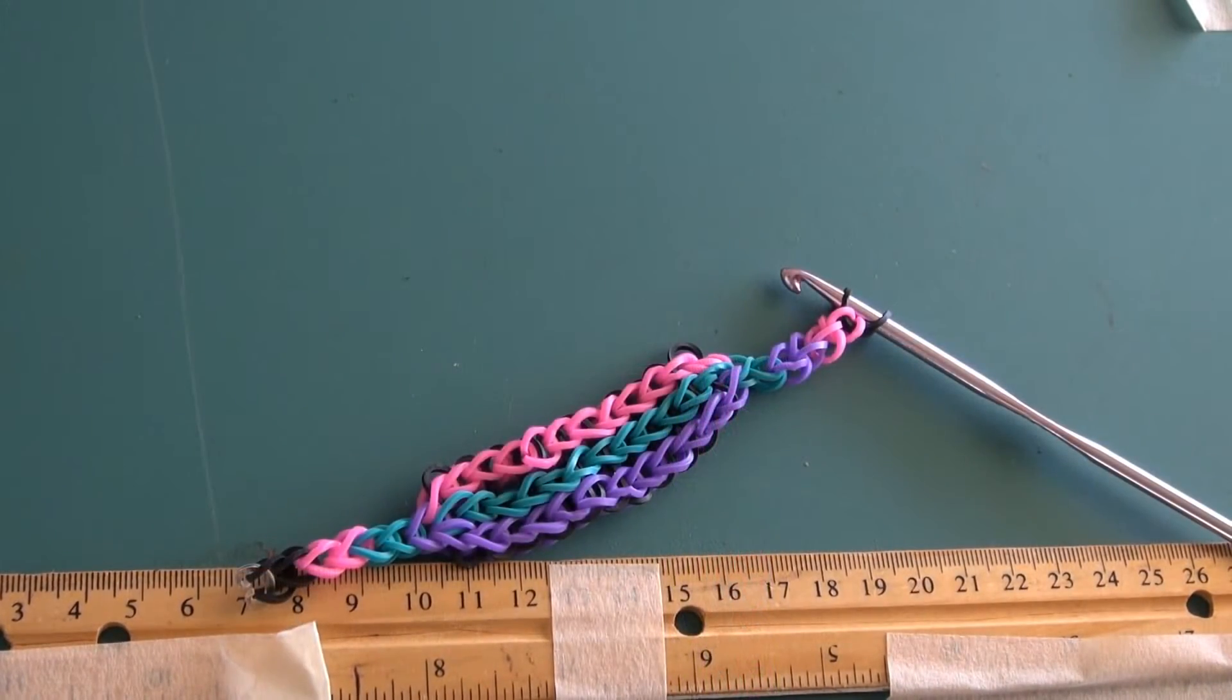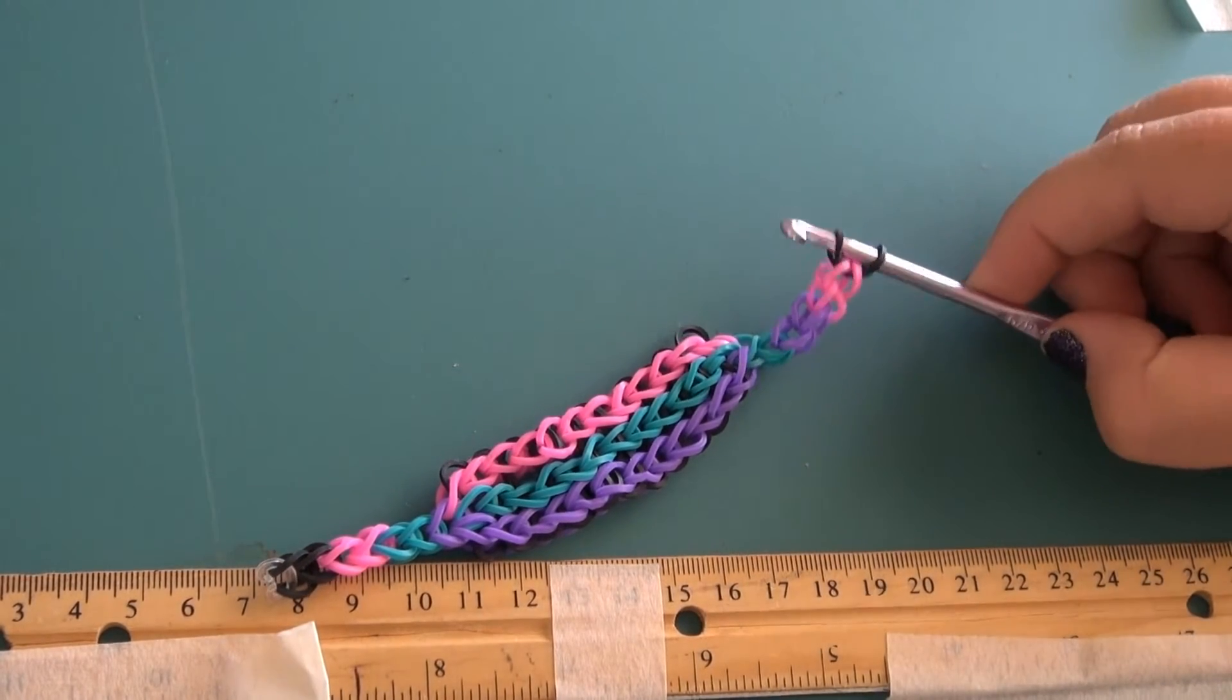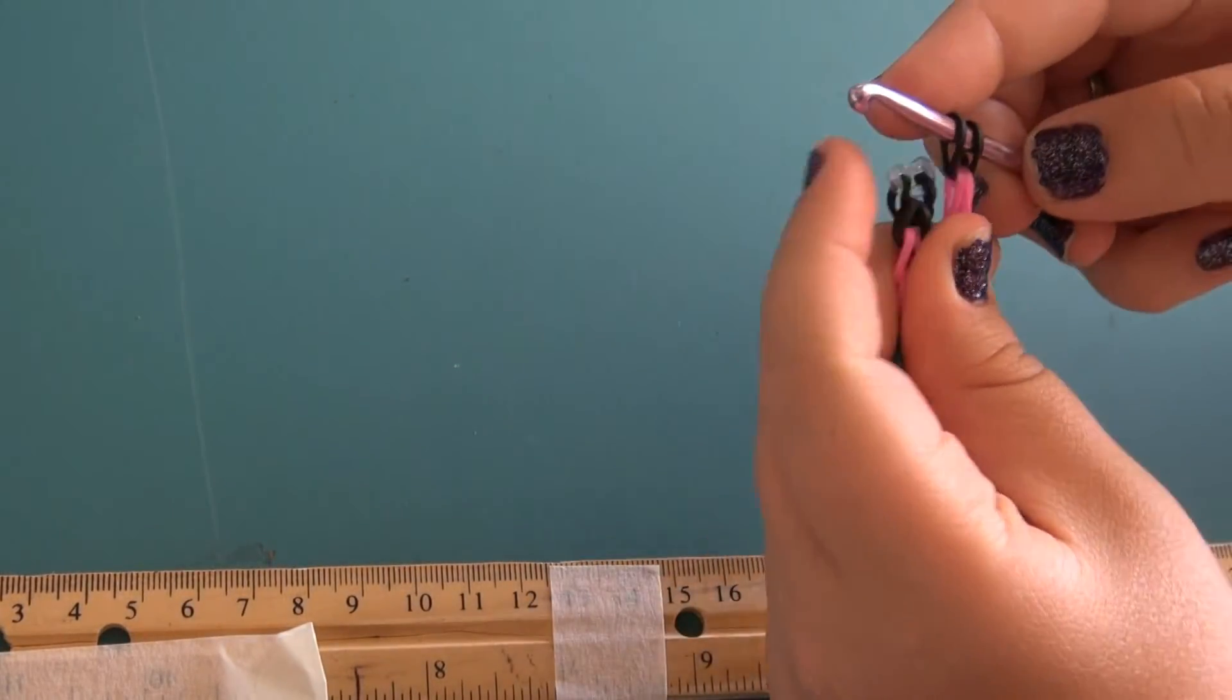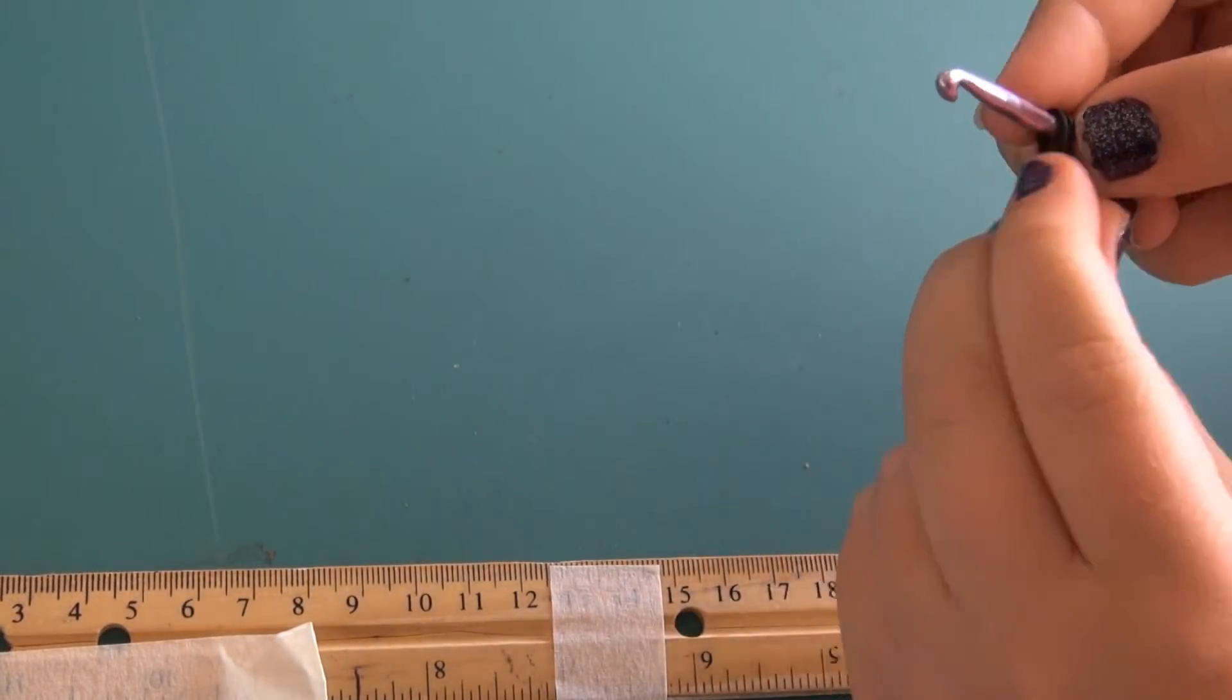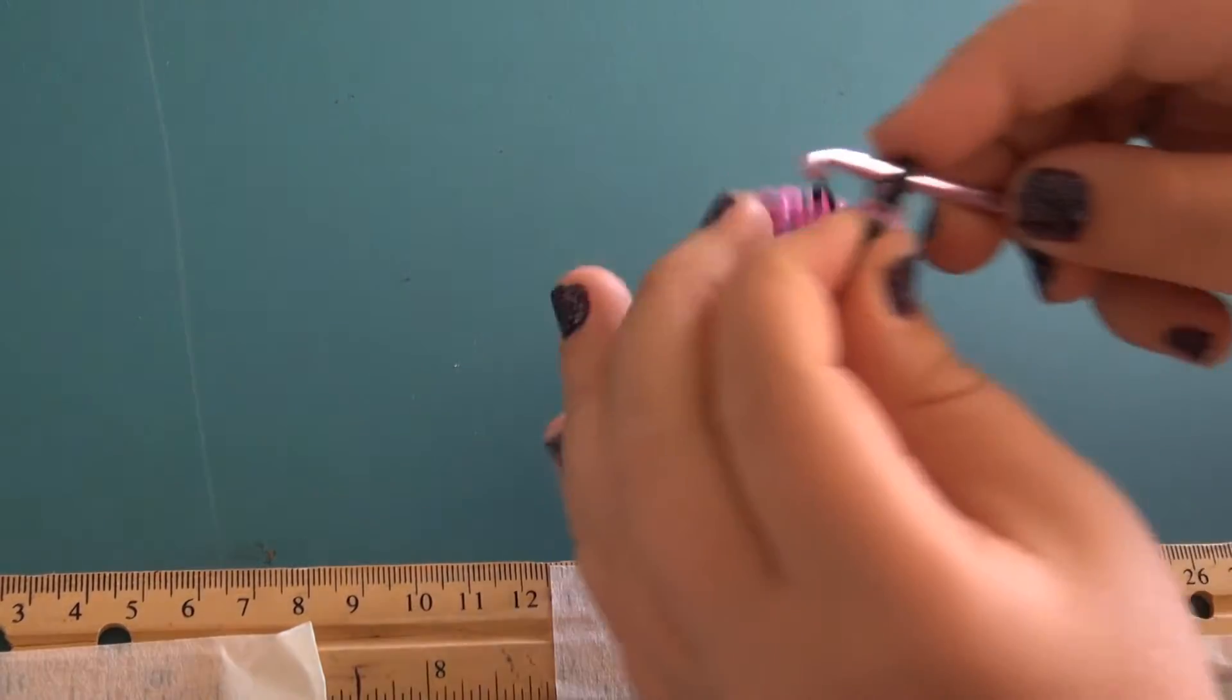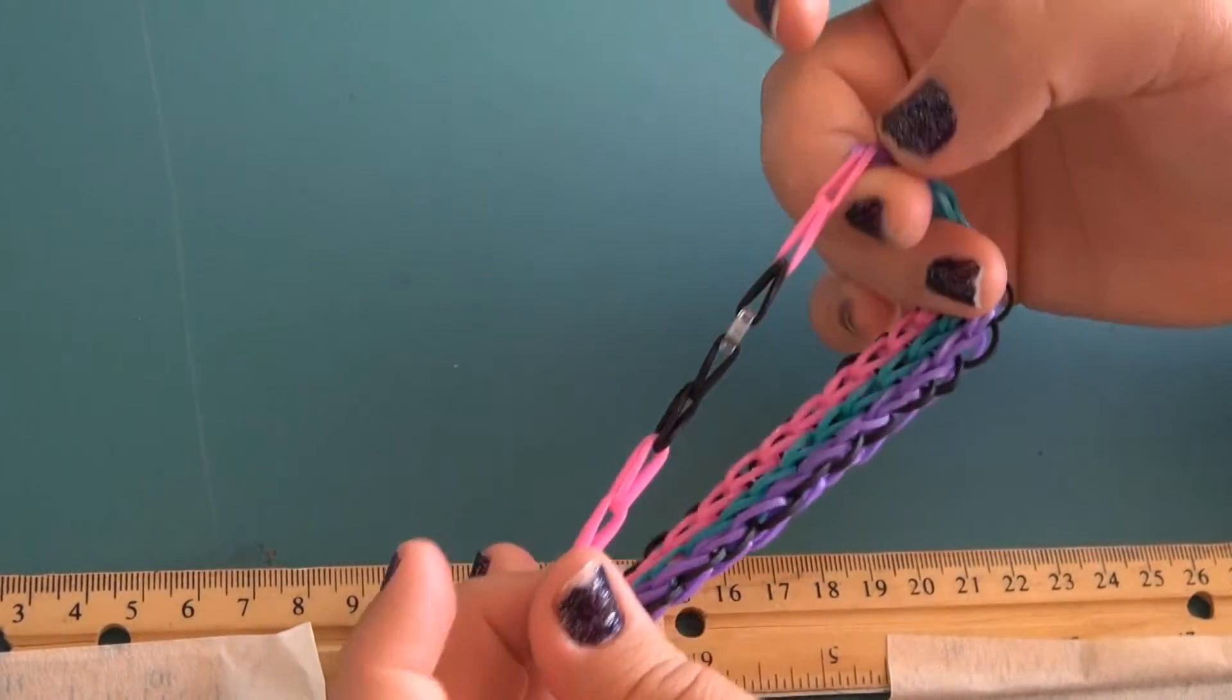So now that I have made an extension on the other side, we are now going to connect the two ends and your bracelet will be complete. To connect the two ends, you just simply stick the bands in the C-clip. And once they are in, you can slide out your hook and it is now a bracelet.